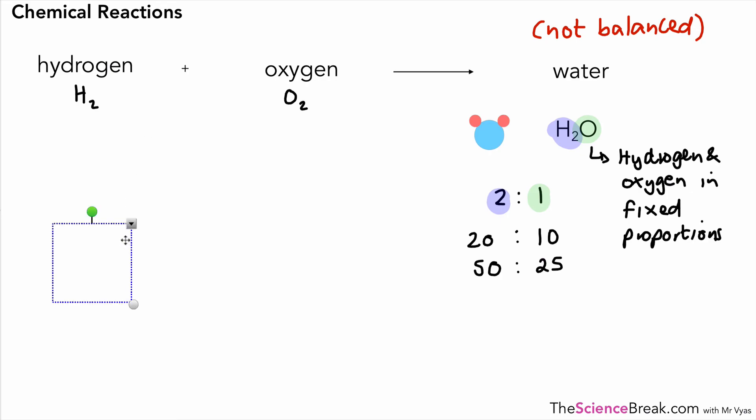This is what we mean by fixed proportions. Let's have a look at another example. This is magnesium chloride, MgCl2. Those two combine in fixed proportions, for every one magnesium we have two chlorines. So it's a ratio of 1:2. For example, 400 magnesiums would give us 800 chlorines.